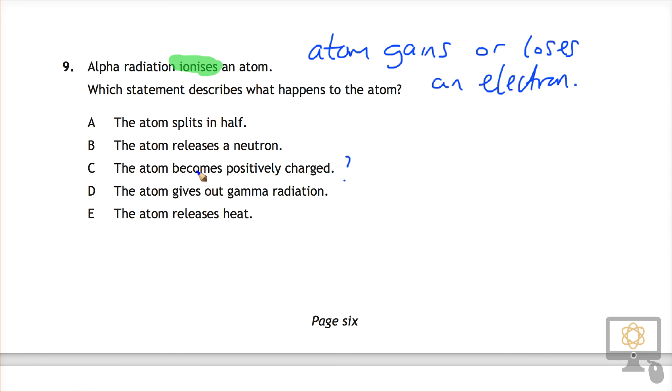So going back to C, it becomes positively charged. Well, if we have an atom that loses an electron, if an electron is negatively charged, then because it loses that electron, the atom will now be overall positively charged. And so therefore C is definitely the answer which is correct.